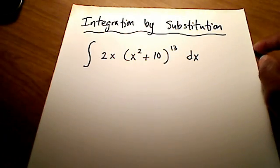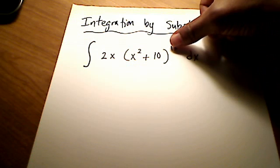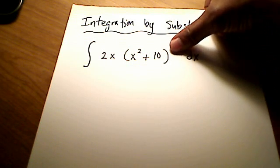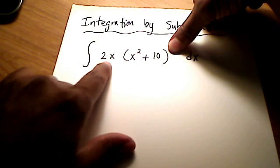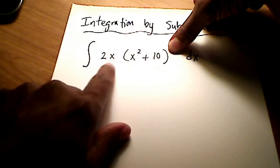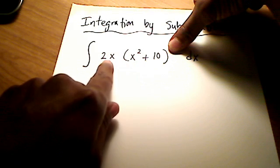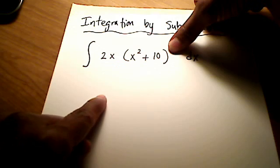And the way this works is, if this exponent here in the integrand wasn't there, if that 13 wasn't there, then I would probably distribute this 2x to both of these terms inside, giving you 2x to the third, and then the next term would be 20x, and then we could find the antiderivative of these.